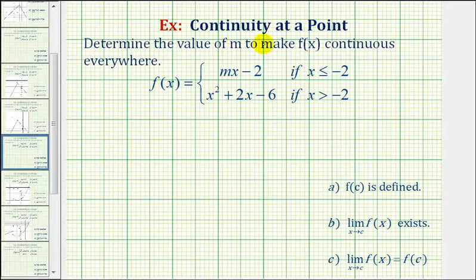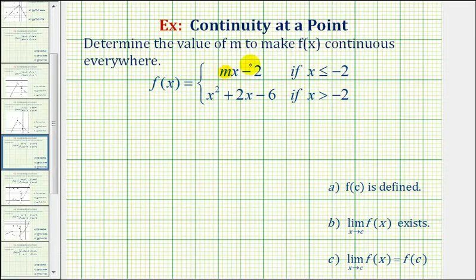We want to find the value of m to make f of x continuous everywhere. We'll notice f of x is a piecewise defined function where m would be the slope of the line when x is less than or equal to negative two, and when x is greater than negative two, we have a quadratic function.